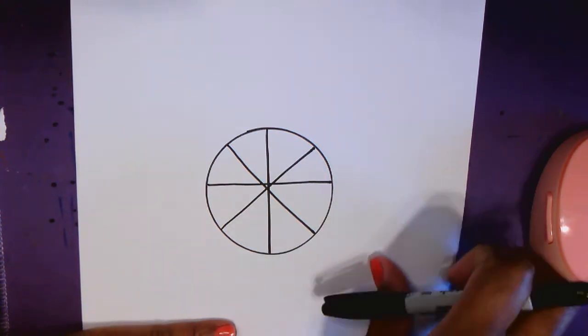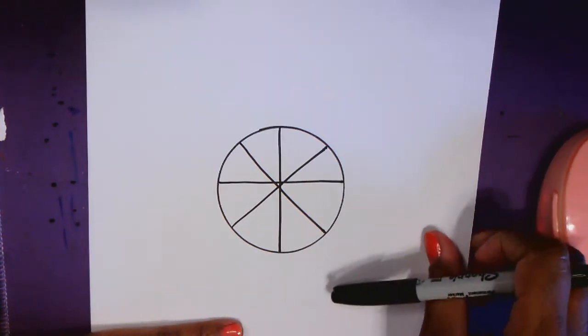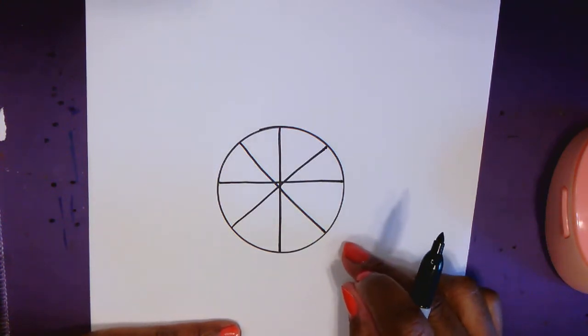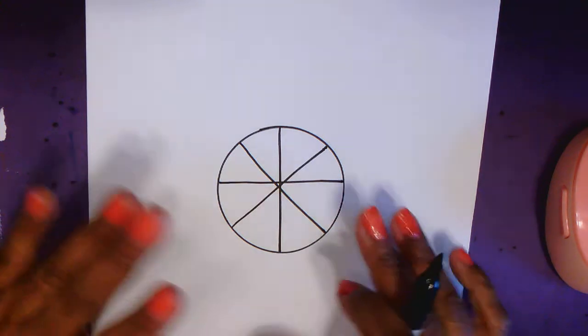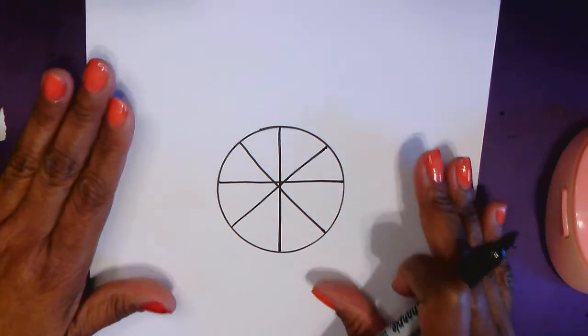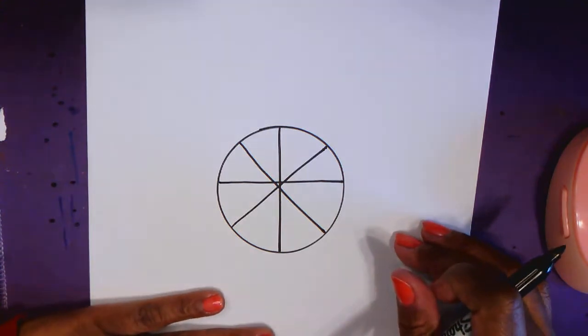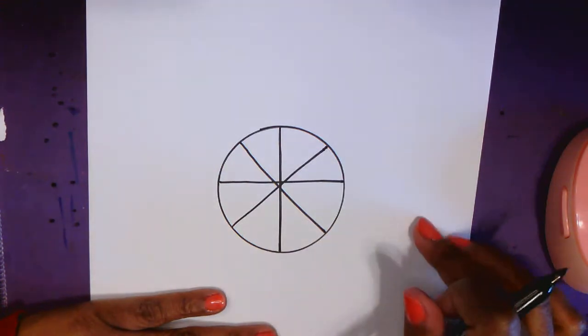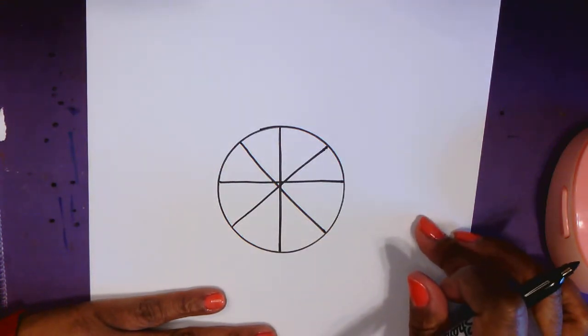Now we want to create like a flower theme or a lotus in the center and the way you do that is just by adding half circles. So this is going to be our shapes mandala. Everything we do in this mandala will be based on shapes.